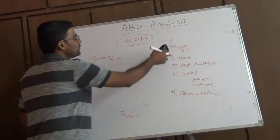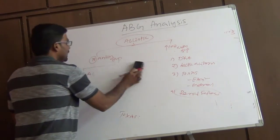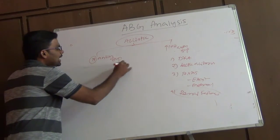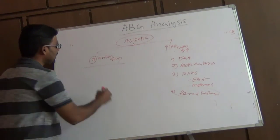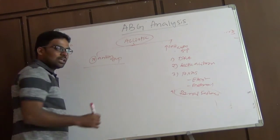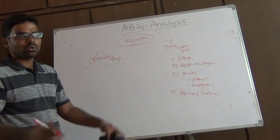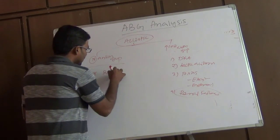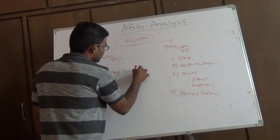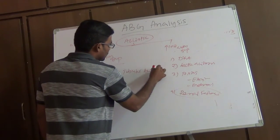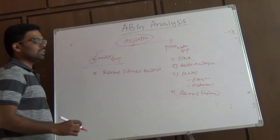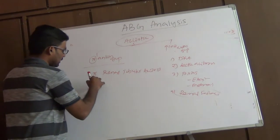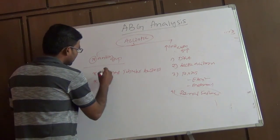Normal anion gap acidosis is seen in two important conditions, the most notable being renal tubular acidosis.